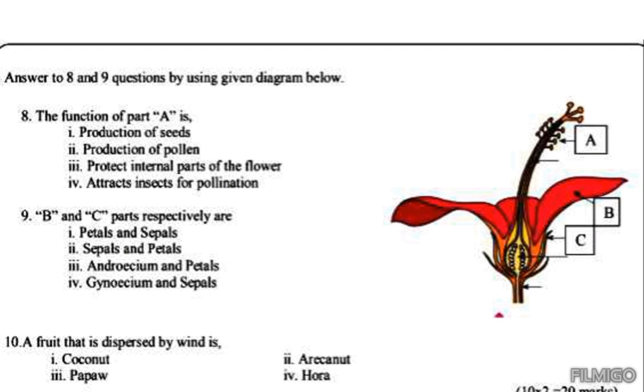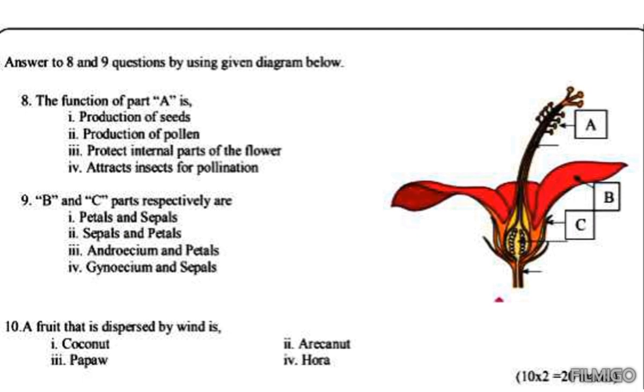Question number eight: the function of part A is? We'll see what is part A. The main reproductive structure of a plant is the flower. In a flower, there are four main parts: sepals, petals, gynoecium, and androecium.